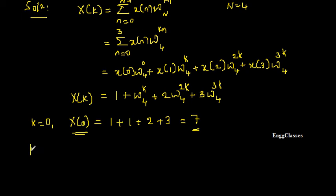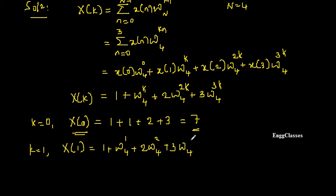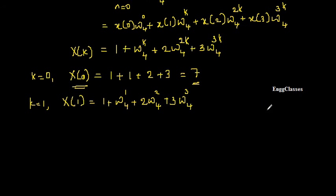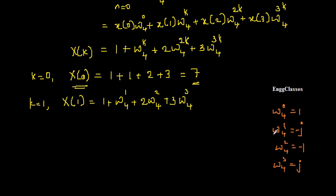Next, putting k equal to 1, I get X(1) equal to 1 plus W_4 to the power 1 plus 2 times W_4 to the power 2 plus 3 times W_4 to the power 3. To evaluate this I use the twiddle factor values: W_4 to the power 0 is 1, W_4 to the power 1 is minus j, W_4 to the power 2 is minus 1, and W_4 to the power 3 is plus j. I recommend watching the dedicated twiddle factor video for details.